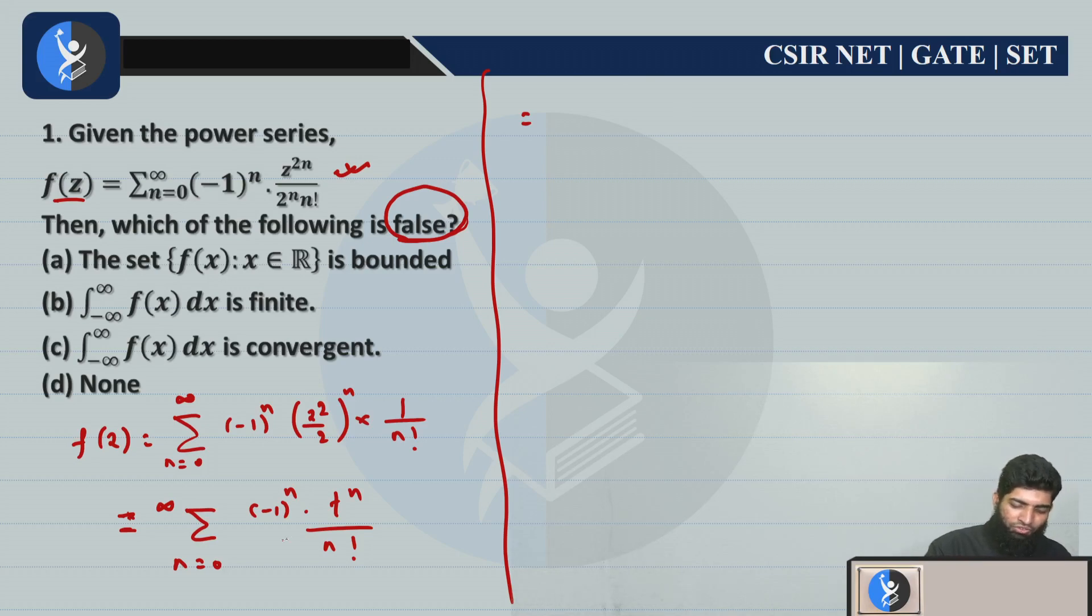So this is some known series that you already know. This is alternating with n factorial, which means this is the series of exponential. When you put n=0, you get 1. n=1 gives minus t/1!, n=2 gives plus t²/2! and so on. Now this is very clear that this is e to the power minus t. What is t? t is actually x²/2, right? So this was your function which was given.